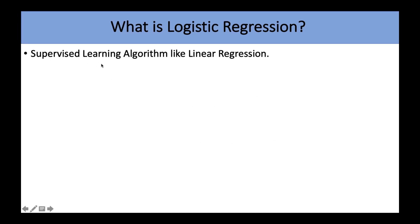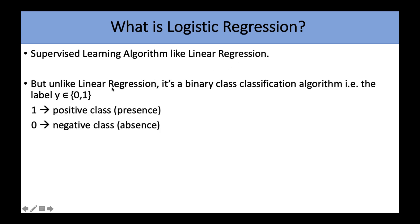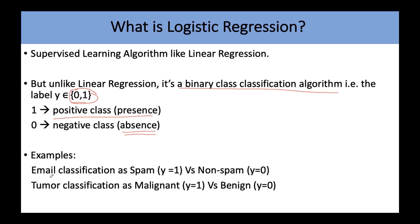So what is logistic regression? It is a supervised machine learning algorithm like linear regression, but there is a key difference. In linear regression, the label y belongs to any real number. But in logistic regression, y is either 0 or 1 — so it's a binary class classification algorithm. 1 stands for the positive class, that is the presence of something, and 0 for the negative class, the absence of something. For example, email classification as spam (y=1) versus non-spam (y=0), or tumor classification as malignant (y=1) versus benign (y=0).